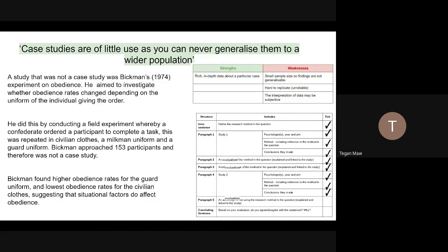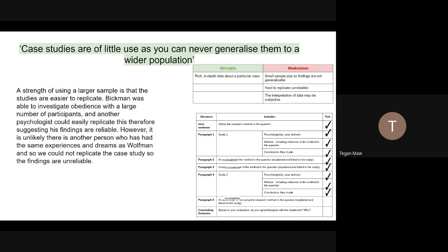The last thing we're going to do is just put in another evaluation just to really cement our AO3 marks. So we've gone for a strength of using a larger sample is that the studies are easier to replicate. Bickman was able to investigate obedience with a large number of participants and another psychologist could easily replicate this, therefore suggesting his findings are reliable. So we've linked that back to Bickman. Let's now link it back to Freud. However, it is unlikely that there's another person who has had the same experiences and dreams as Wolfman, and so we cannot replicate the case study, so the findings are unreliable. So that's really just to secure the knowledge that we understand advantages of case study versus not using a case study.